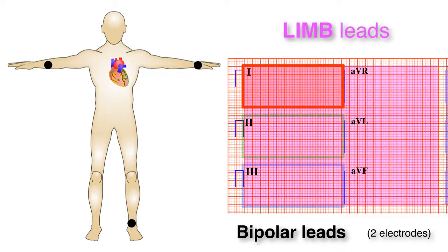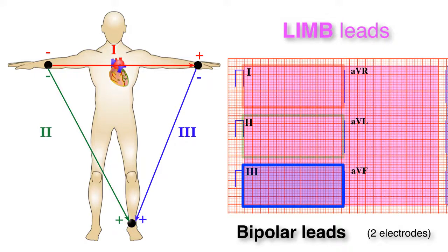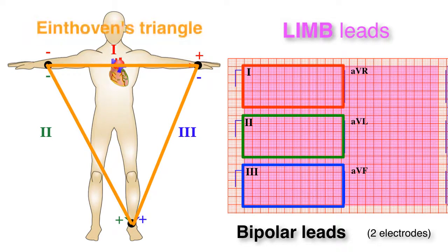Lead 1 is the vector between the right arm to the left arm. Lead 2 is the vector between the right arm to the left leg. And lead 3 is the vector between the left arm to the left leg. These three limb leads form a triangle called Einthoven's triangle.